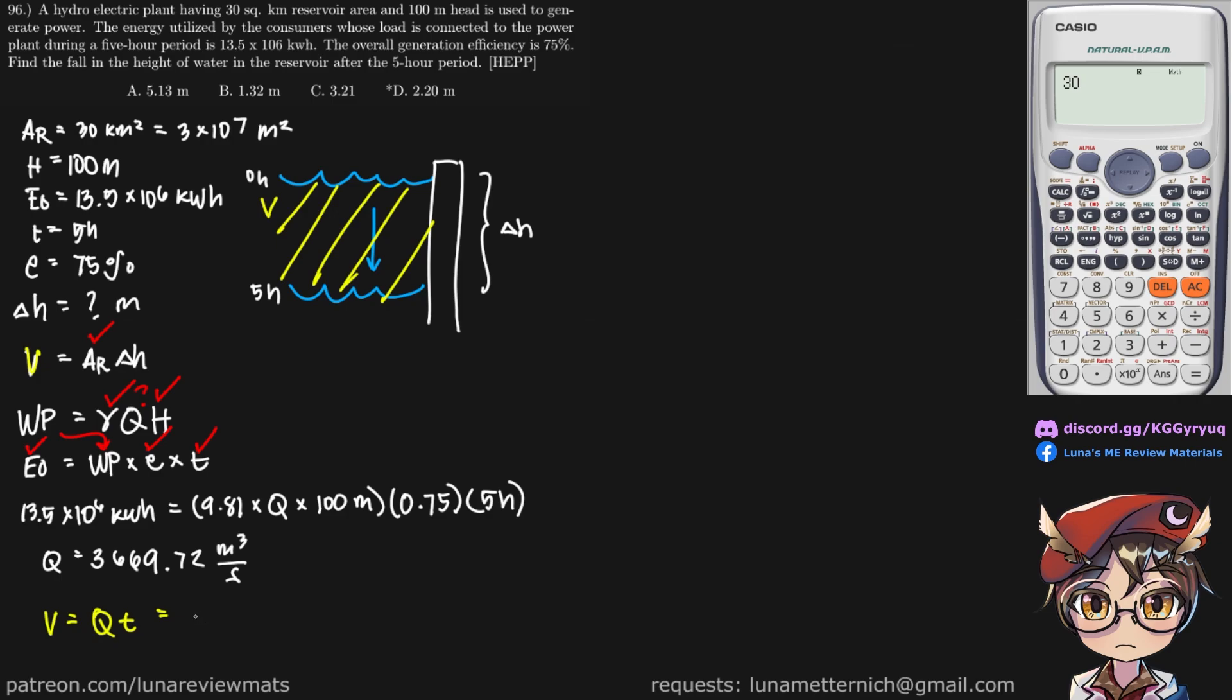And then this becomes 3669.72 cubic meters per second. Then we multiply that by our period. Let's not forget to multiply this by 3600 so that we get it in seconds. These two cancel out.